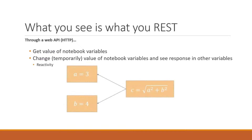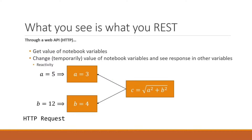A really simple example would be a notebook with three different cells: we define A and B on the left, and then C in terms of A and B. This API could temporarily set A and B equal to different values — in this case 5 and 12 — and then return the result that has on C. So in that case, C would be equal to 13. The crucial point is that it doesn't actually change any of your notebook code or state. It leaves everything as is, but evaluates your notebook almost in a hypothetical case.